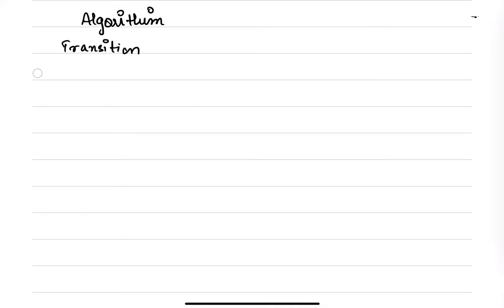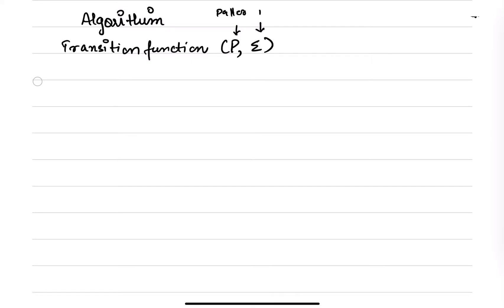For the transition function, the input is your pattern — remember, we used to make a transition table or an automata for a pattern, not for a text. The input symbols, like in the concept video we took a, b, and d as inputs, those will be the inputs. So you can write pattern and the input.